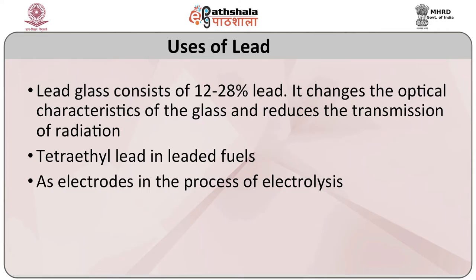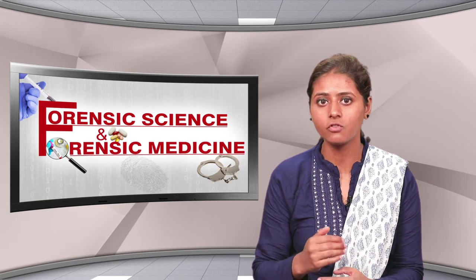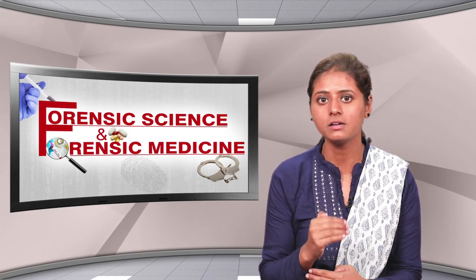Because of its density, low cost, and ease of use, lead is used as shielding from radiation. Lead glass consists of 12 to 28% lead, which changes the optical characteristics of the glass and reduces the transmission of radiation. Tetraethyl lead is used in leaded fuels and as electrodes in the process of electrolysis.